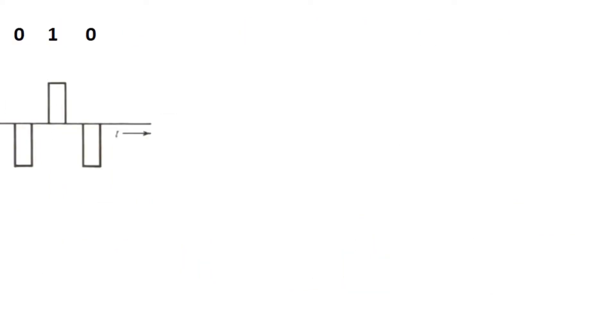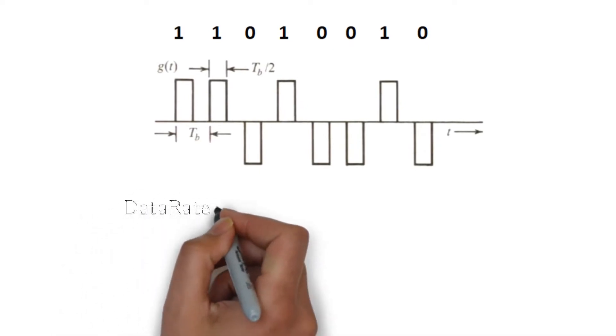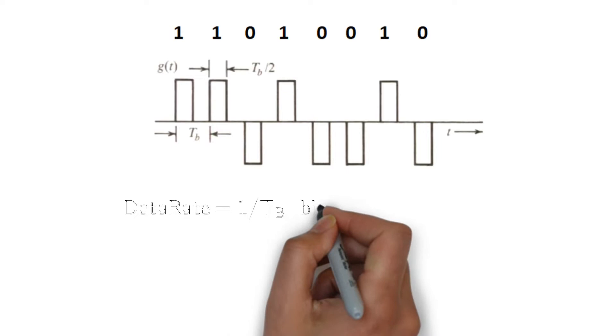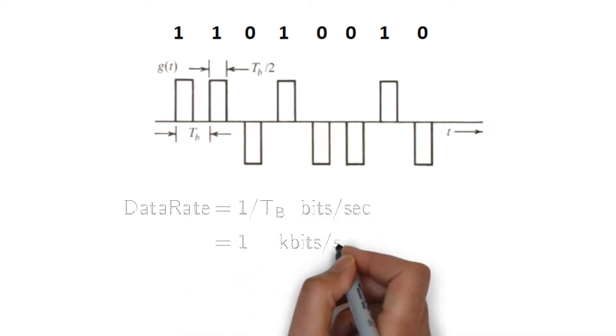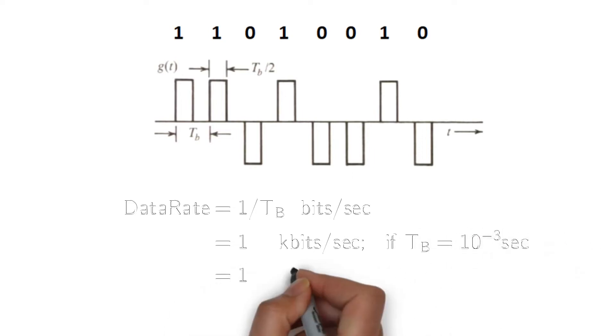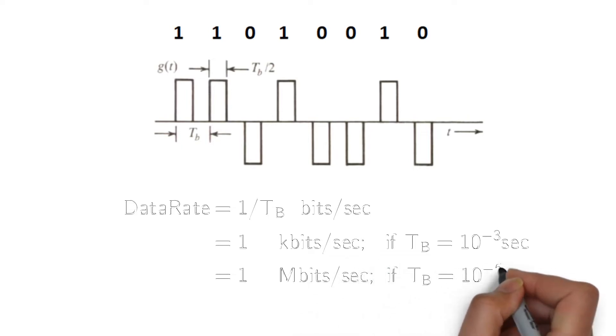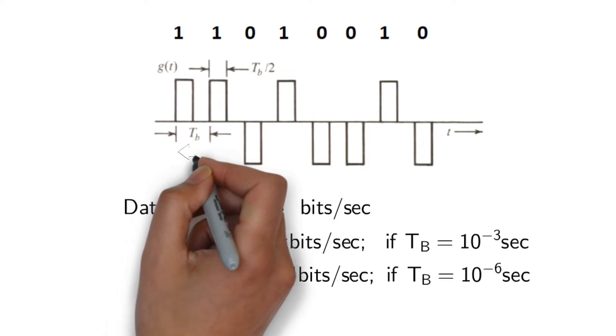The data rate is simply number of bits per second. Mathematically we have 1/TB bits per second. We will have 1 kilobit per second data rate if we assign a TB of 1 millisecond, or we can have 1 megabit per second for 1 microsecond of TB. That is, the data rate increases by decreasing the allocated duration of a bit.